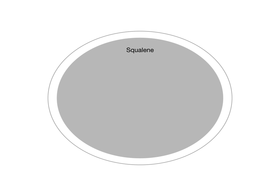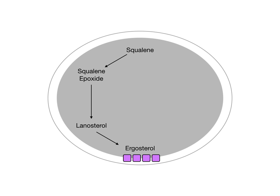You start with something called squalene, and squalene gets converted into squalene epoxidase. Squalene epoxidase gets converted into lanosterol, and then that lanosterol gets converted into the final product known as ergosterol. And it's that ergosterol which is the fungal cell's version of cholesterol, giving its plasma membrane structural integrity.